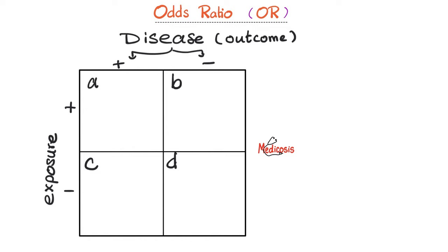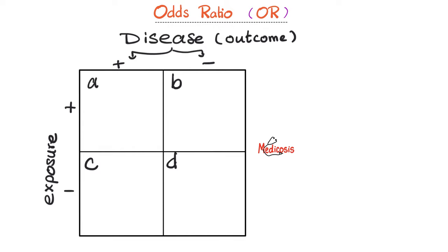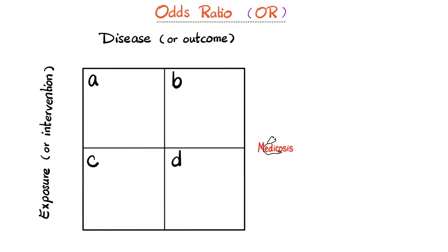For example, with exposure to cigarettes and lung cancer as the disease: quadrant A represents people exposed to smoking who developed lung cancer; B — smoked but did not develop lung cancer; C — did not smoke but did develop lung cancer; D — neither smoked nor developed lung cancer. Your table should always look like this. Pause and review — practice makes perfect.